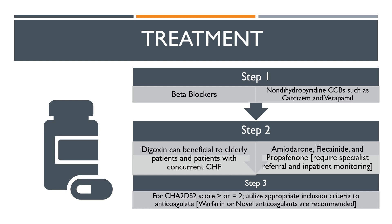Beta blockers and non-dihydropyridine calcium channel blockers work to inhibit impulses from the atria to ventricles. Digoxin can be beneficial to elderly patients and patients with concurrent CHF. Amiodarone, flecainide, and propafenone require specialist referral and inpatient monitoring.